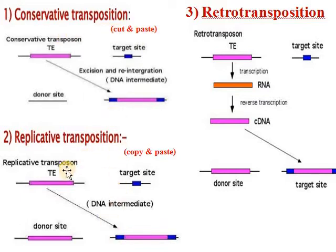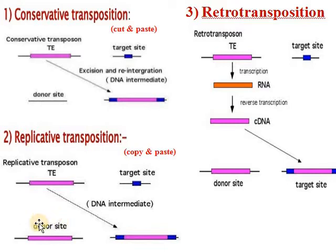In replicative transposition, the transposable element on the donor side first becomes a copy, and that copy moves to the target site. This is known as copy and paste, or replicative transposition.